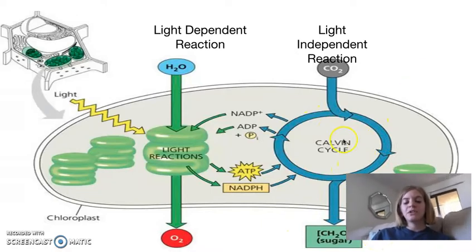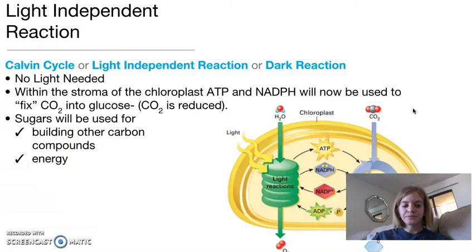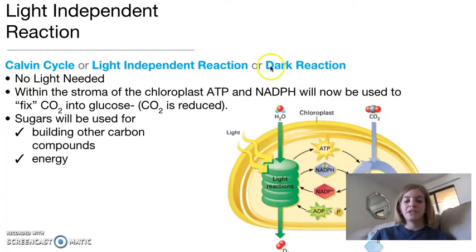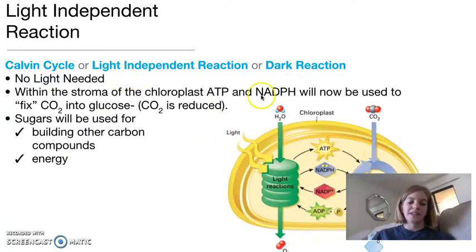It should be noted the Calvin cycle occurs in the stroma and it's also known as the light independent reaction because it doesn't require light to work. Some people used to call it the dark cycle, although this is less commonly used now because it led to the misconception that it could take place in the dark, but that's not necessarily true. It doesn't necessarily work well in the dark; it just means that no light is needed for the input of the reaction, in contrast to the light cycle.